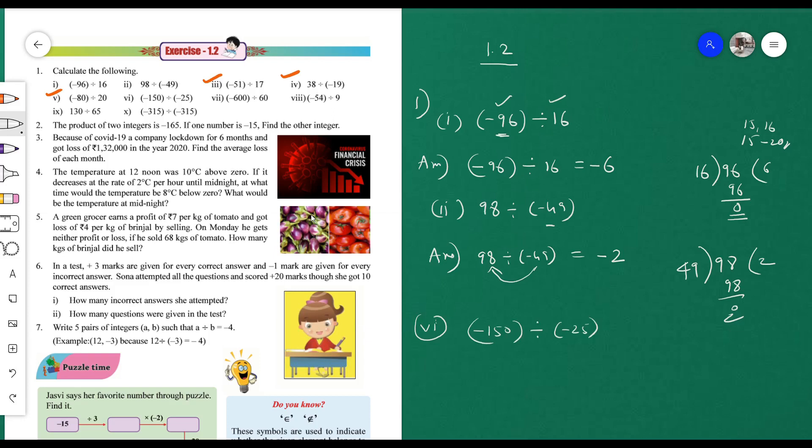Sixth one: minus 150 divided by minus 25. We look at the numbers, 150 divided by 25. 25 times 6 is 150. So minus 150 divided by minus 25 equals 6. The question is whether to keep plus or minus here. Both dividend and divisor have the same sign, so the quotient is plus. The answer is plus 6.